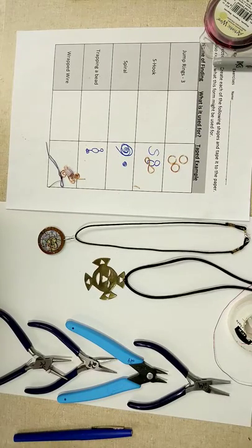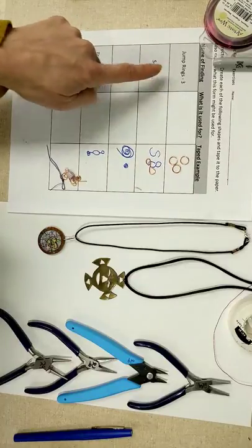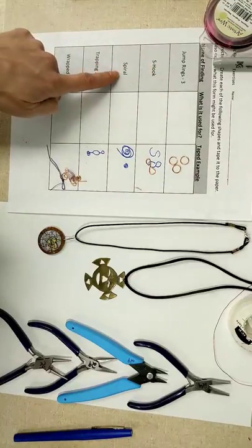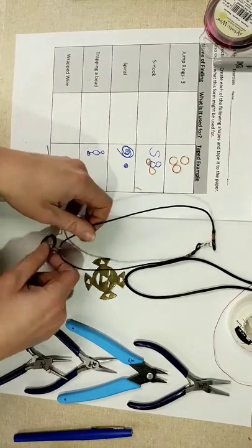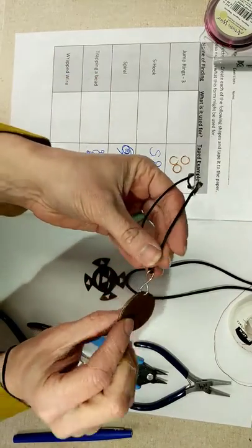Today we're talking about jewelry findings. I'm going to talk about how you can make jump rings, S-hooks, and spirals to begin with. These are all three different types of shapes that you can make using wire, and they help with different types of things.